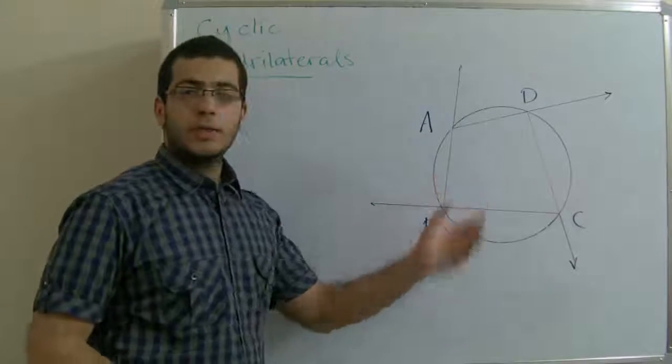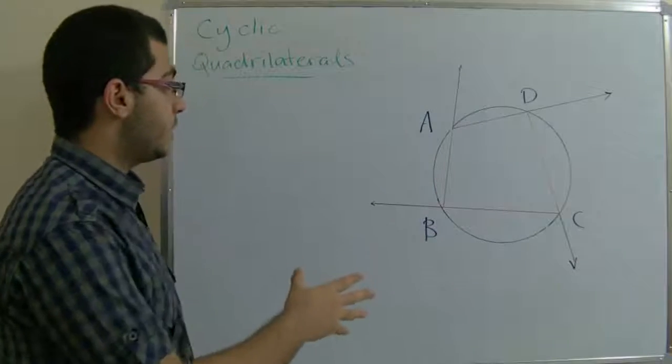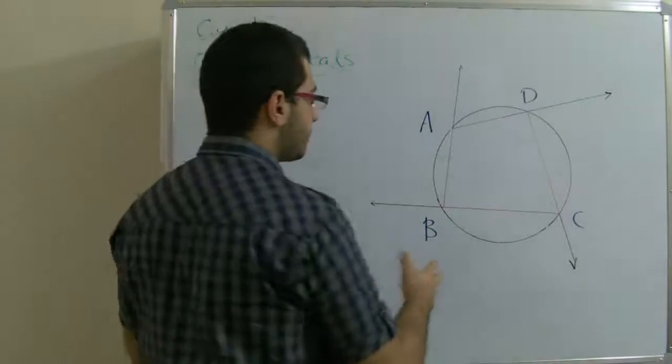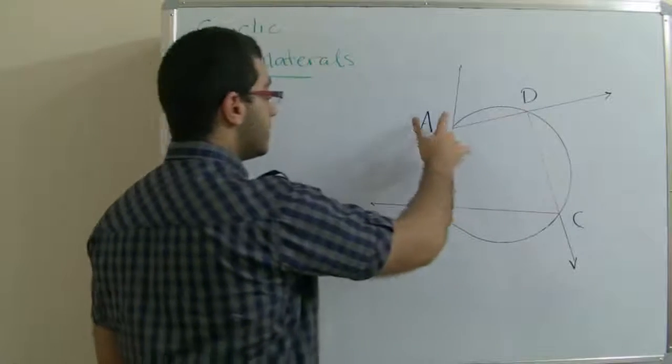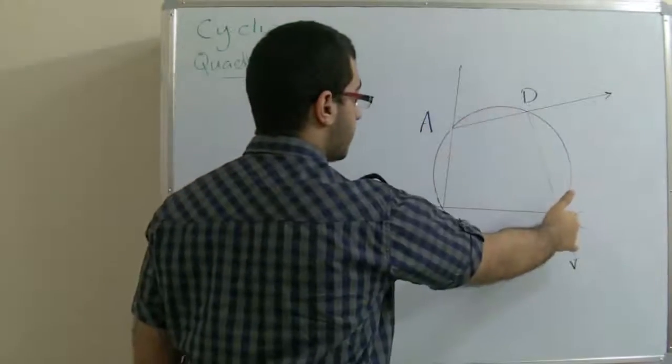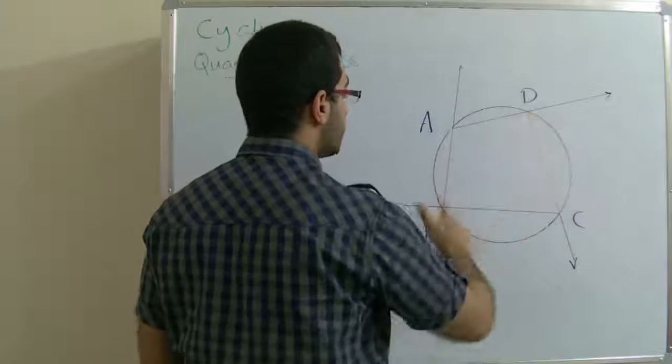Cyclic quadrilaterals have some properties which are due to their presence inside a circle. We can understand the four vertices of the quadrilateral lie on the circle.